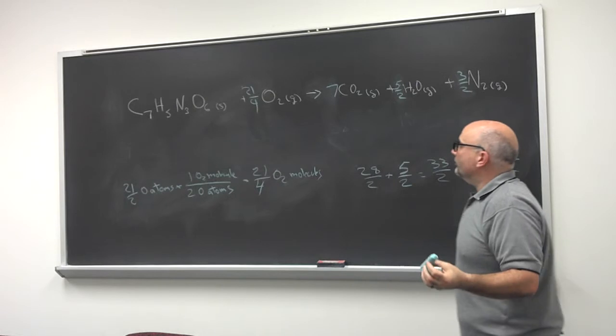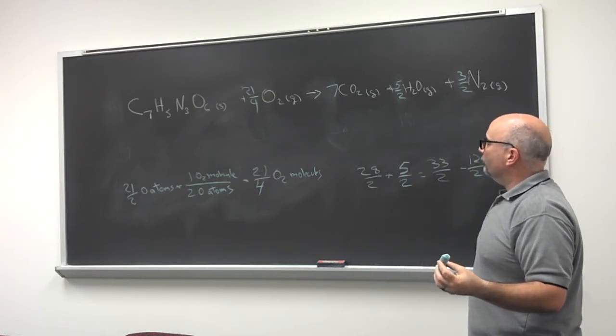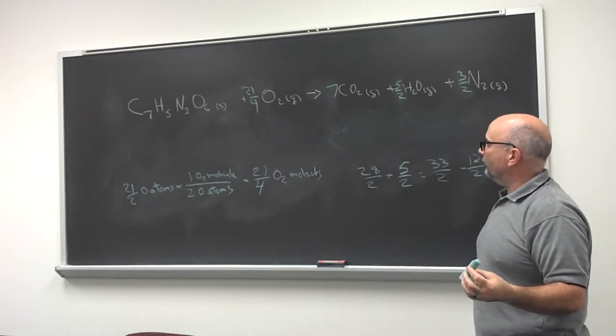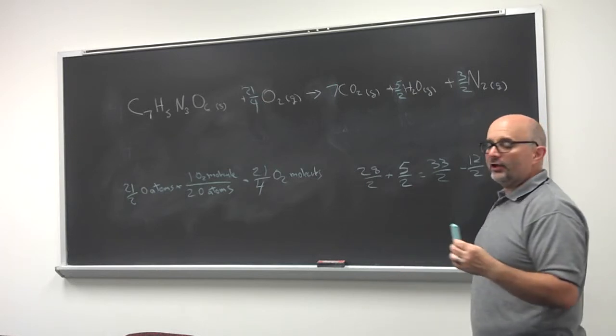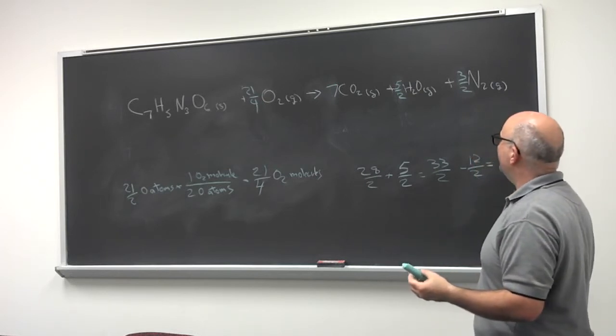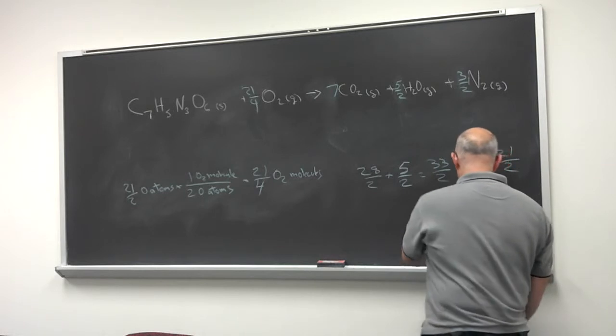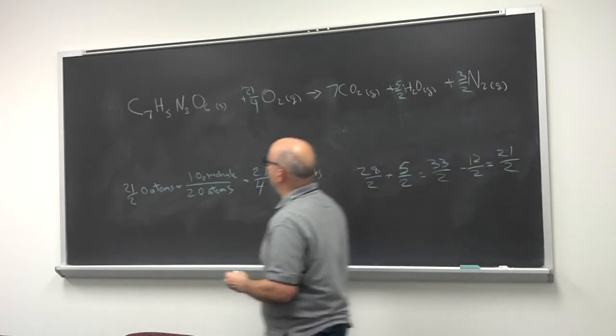Now, the last step is to multiply through by a constant factor that turns us into the smallest set of whole number coefficients. In this case, that factor would be 4, and that should balance this equation.